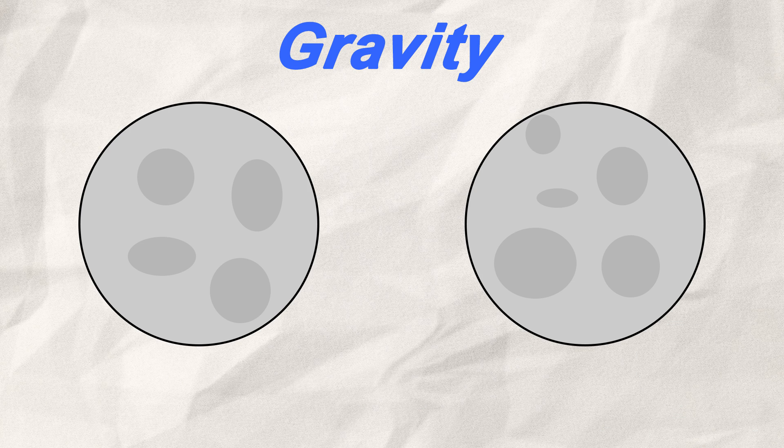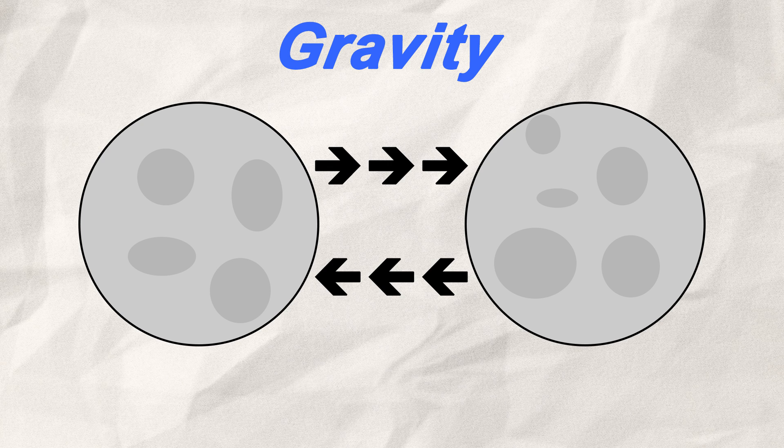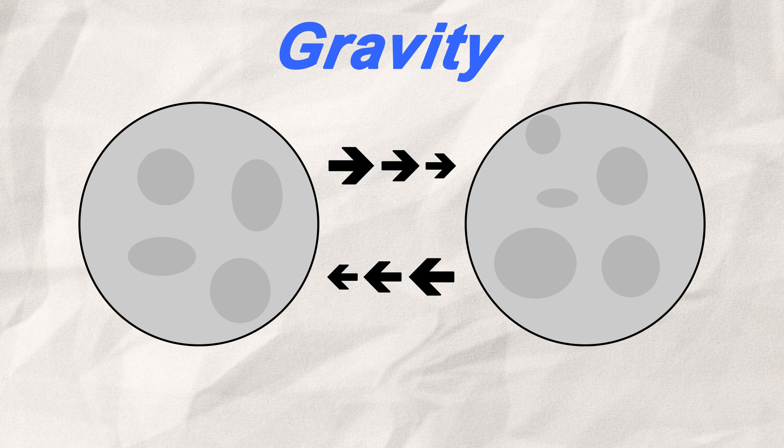First, we have to take a look at gravity. In short, gravity is a force that pulls objects towards each other. This force acts even over long distances, but rapidly grows weaker.